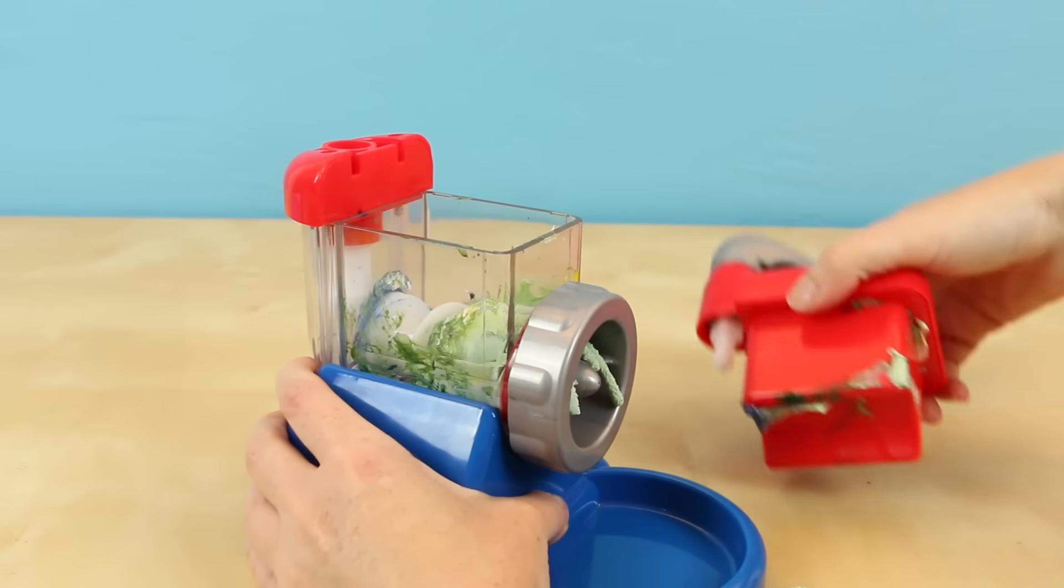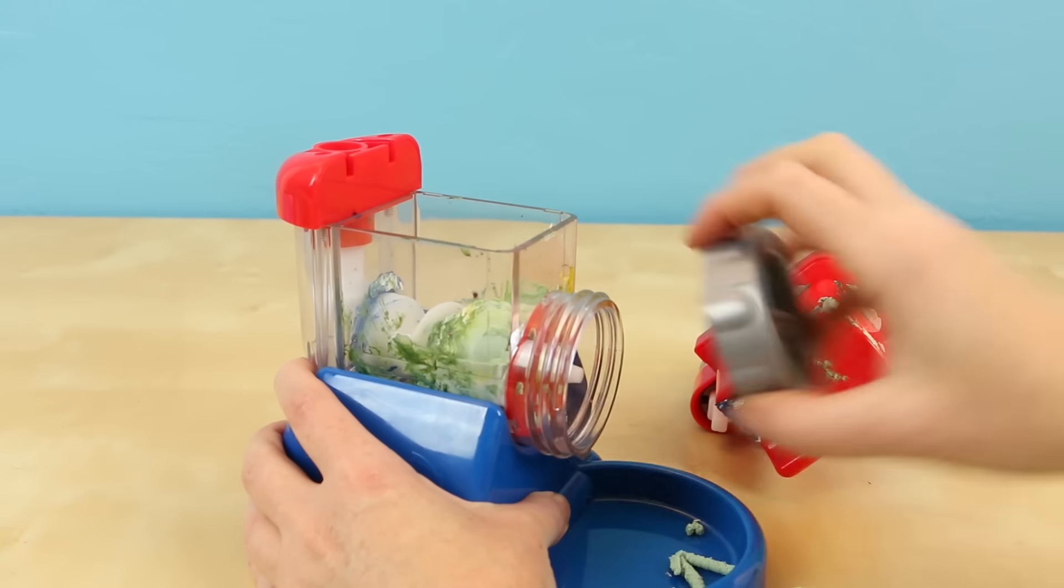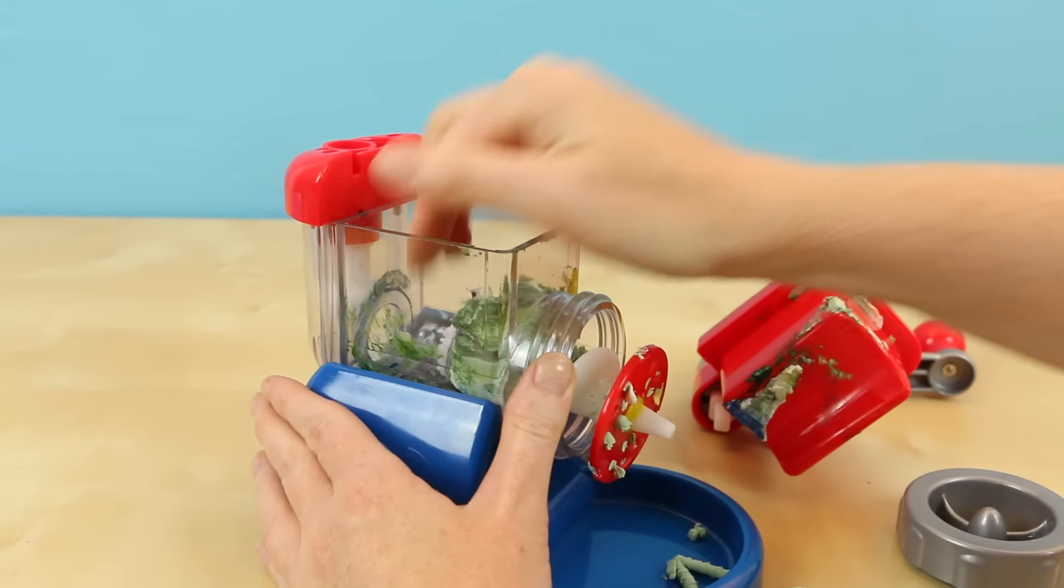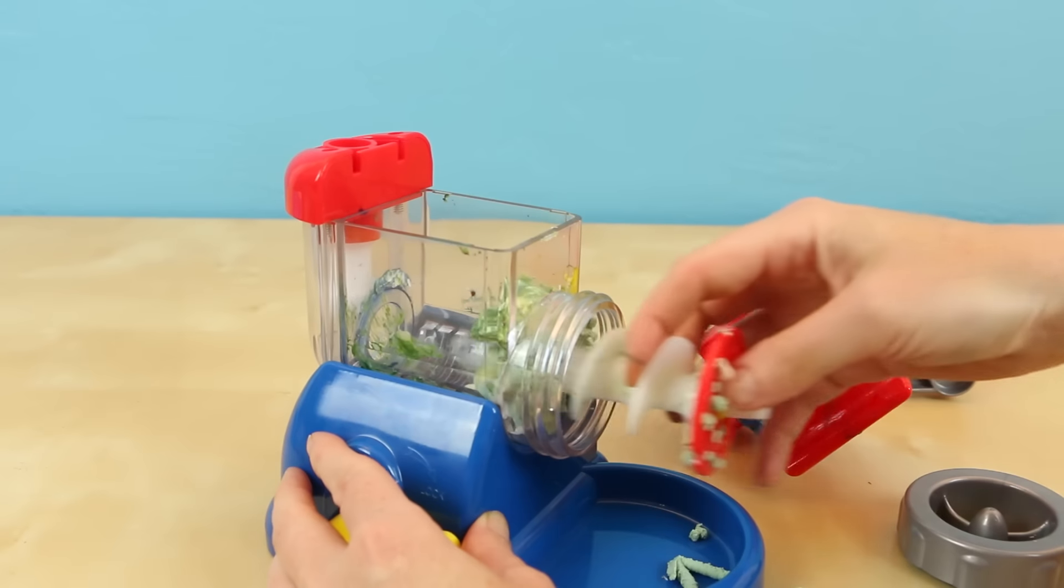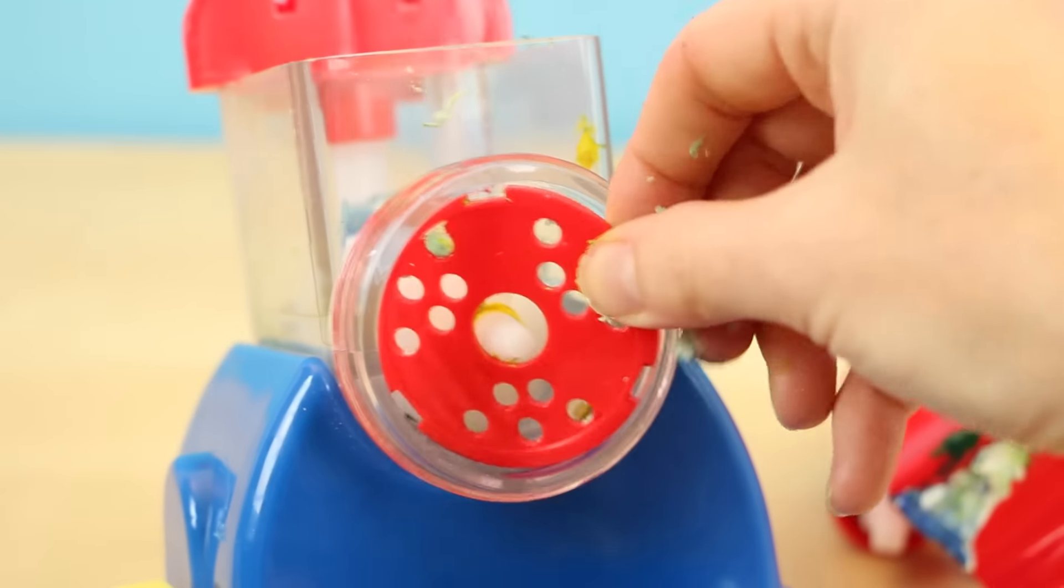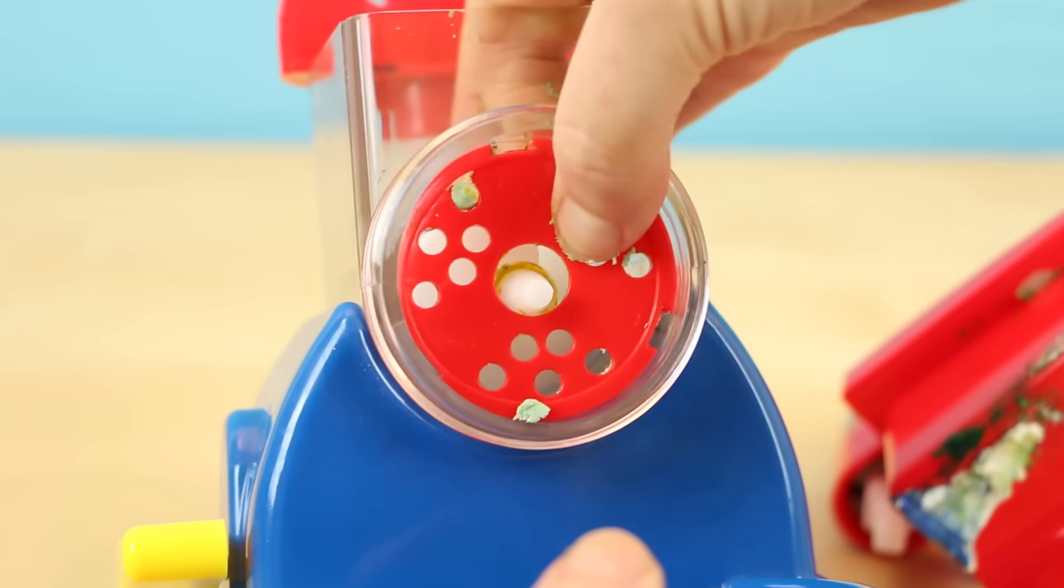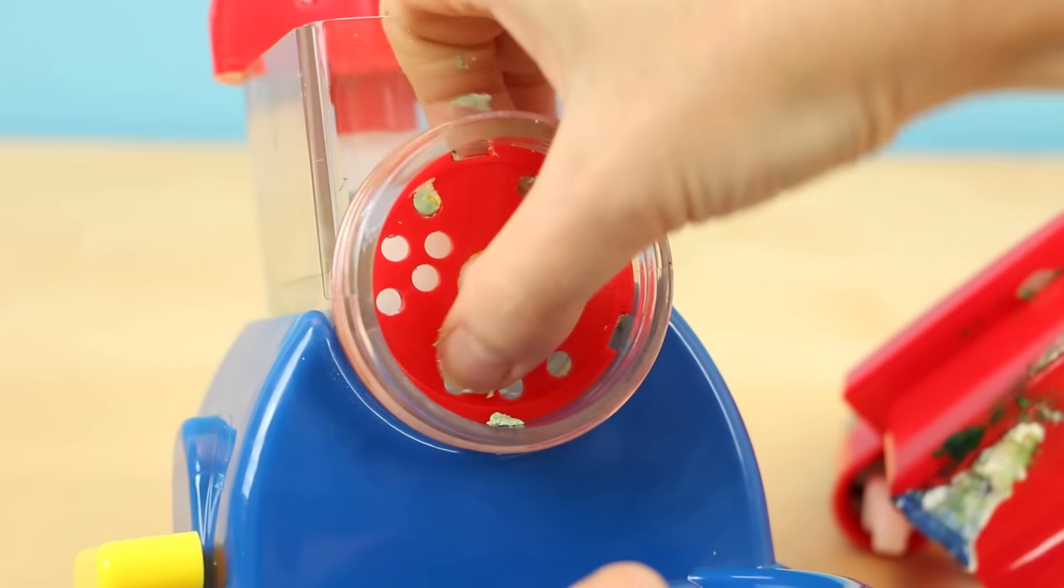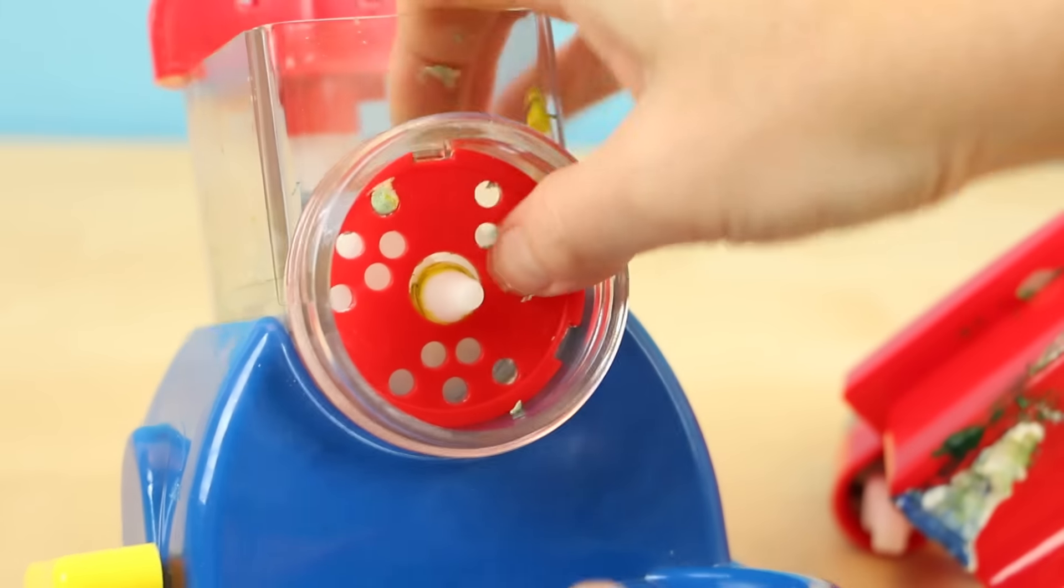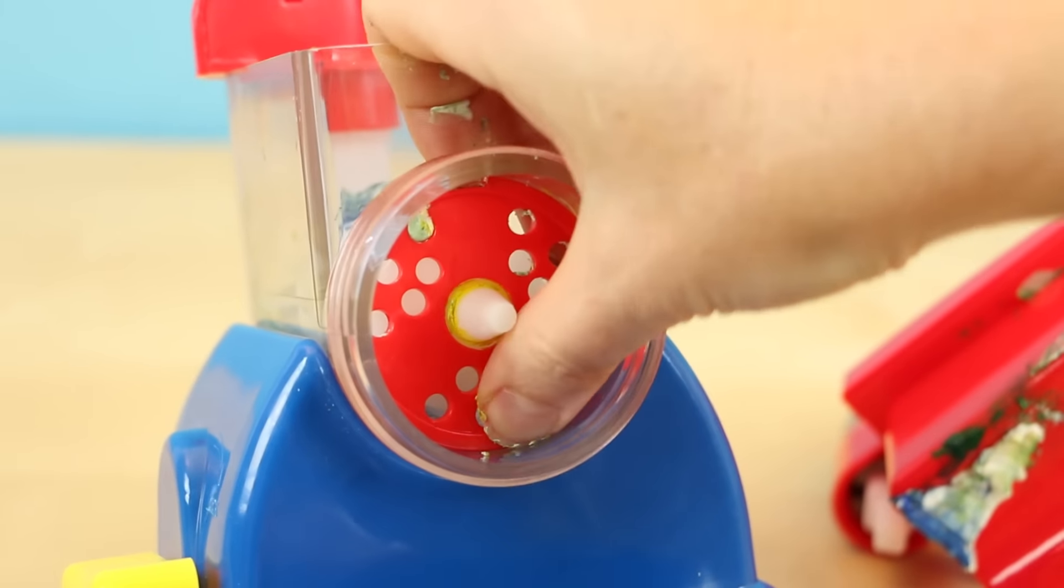Also I do want to give you guys fair warning that this can be a bit of a pain to clean. Although it's very easy to pop out all the pieces, it can be quite challenging to get them back in. This red piece has to go in just the correct way or else the machine doesn't work right. Kids, especially the little ones, are gonna need some help getting this piece back in.